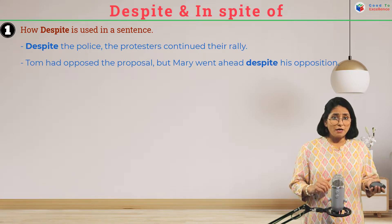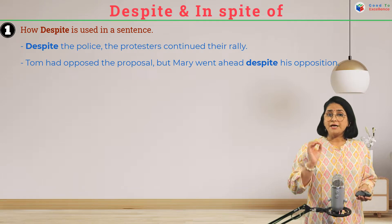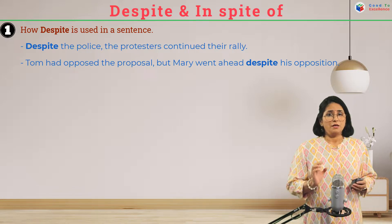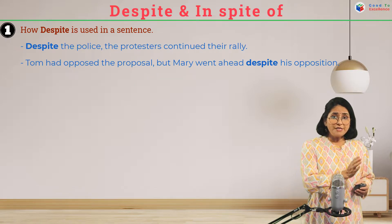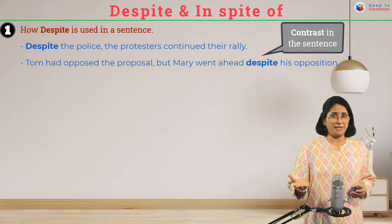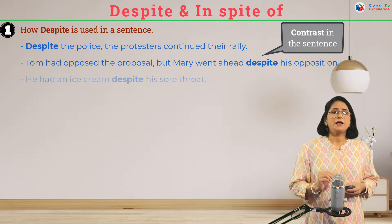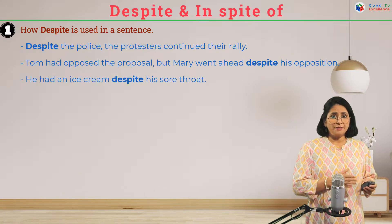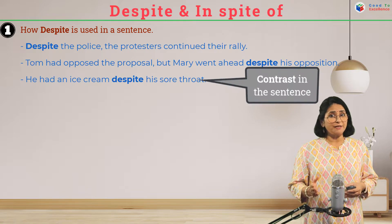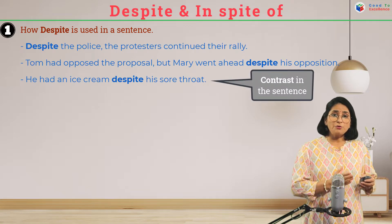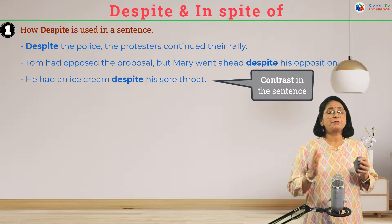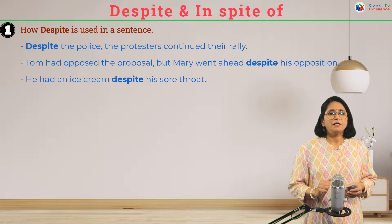Next sentence: 'Tom had opposed the proposal, but Mary went ahead despite his opposition.' Tom didn't like it, Tom wasn't in favor of it, but Mary went ahead. He knew that after eating ice cream his throat would go bad, but still he had it — there is a contrast, so we use 'despite' there.